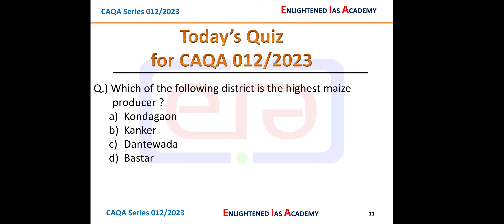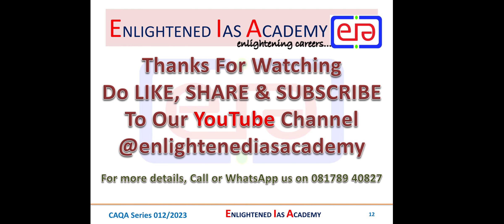Now for today's quiz: Which of the following districts is the highest mace producer in Chhattisgarh state? Option A: Kondagaon, Option B: Kanker, Option C: Dantewada, Option D: Bastar. Give us your answer in the comment section. That's all for this video — do like, share, and subscribe to our YouTube channel, and keep enlightening your studies.